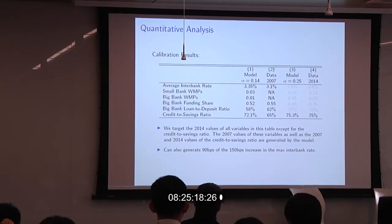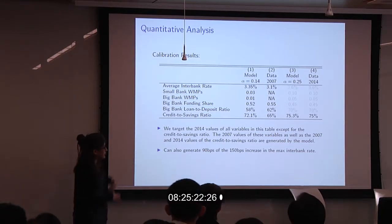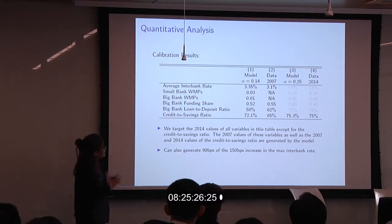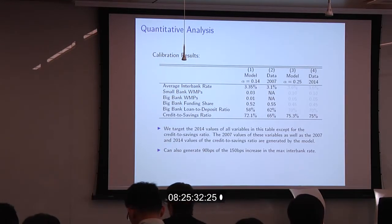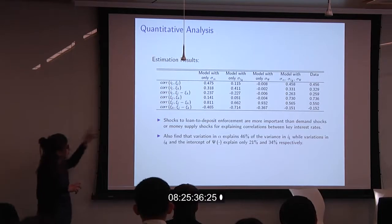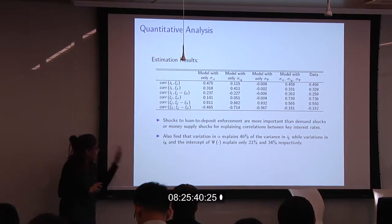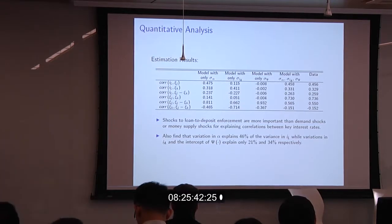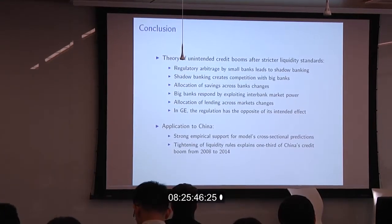The calibration takes the model to data, matches moments well, explains about half of the trends in the interbank rate, and accounts for a third of the increase in the credit-to-savings ratio. A variance decomposition finds that shocks to liquidity regulation are more important than shocks to demand or money supply in explaining correlations in the data.